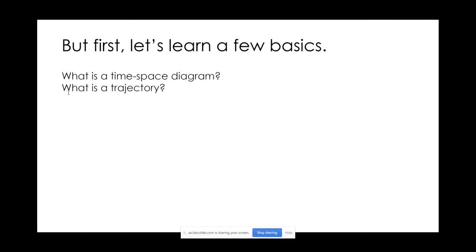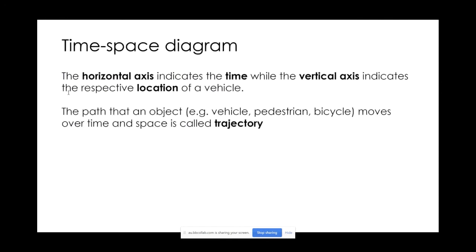But let's learn some fundamentals before we dive into equations of motion. What is a time-space diagram, and what is a trajectory? These are the two main analysis and visualization tools we use in traffic flow theory. A time-space diagram is a plot where time is on the horizontal axis and the vertical axis represents the location or distance of a vehicle. The path that an object moves through time and space is called its trajectory.